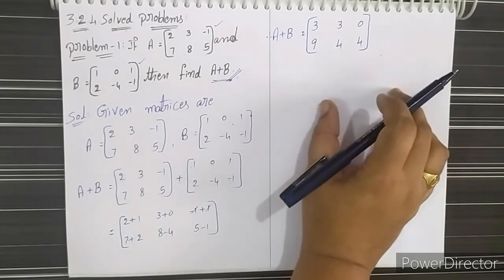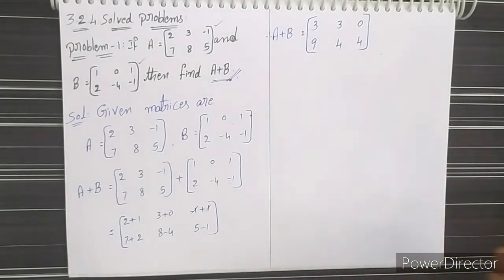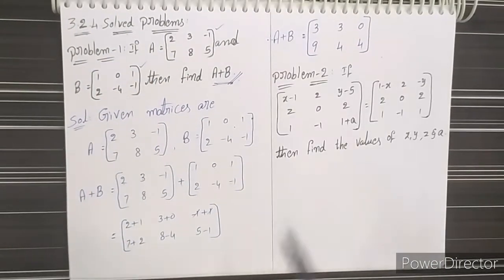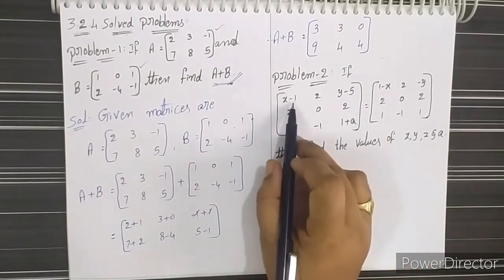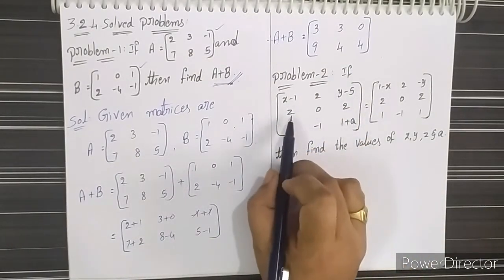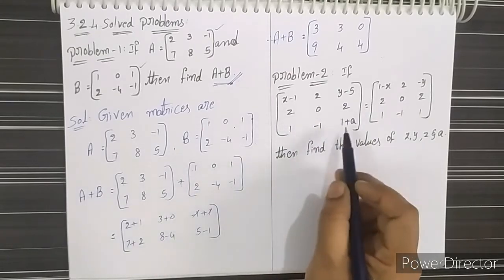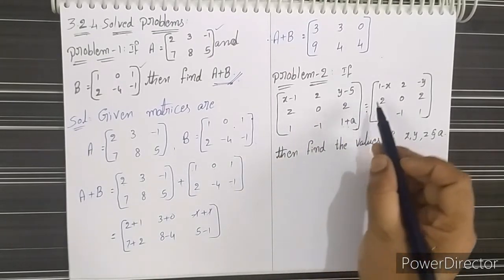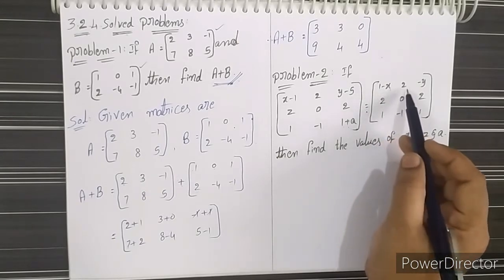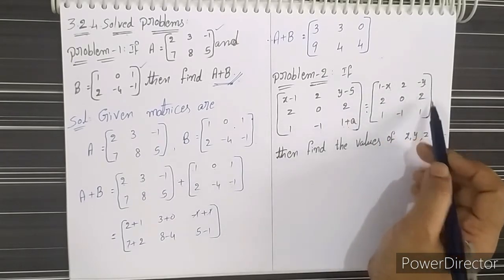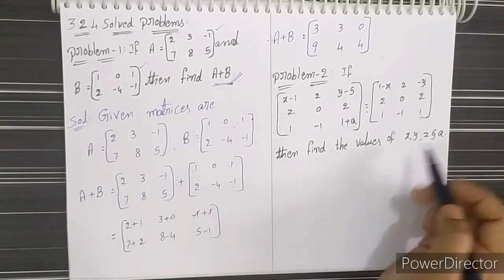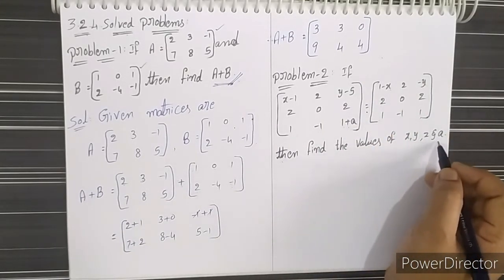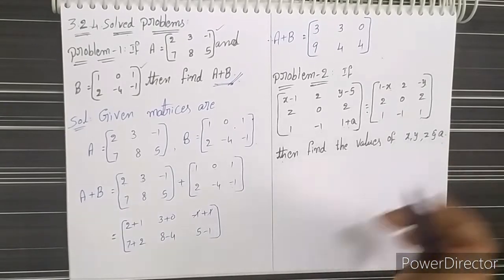We will now discuss the second problem in section 3.2.4. The second problem is: if the two matrices [x-1, 2, y-5; z, 0, 2; 1, -1, 1+a] equals [1-x, 2, -y; 2, 0, 2; 1, -1, 1], then find the values of x, y, z, and a.